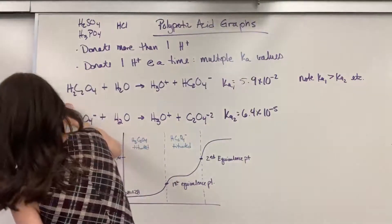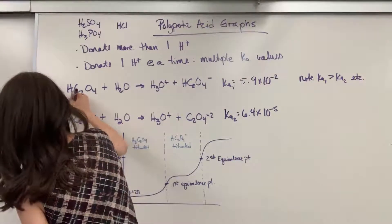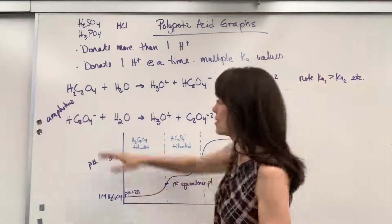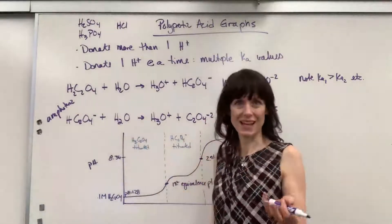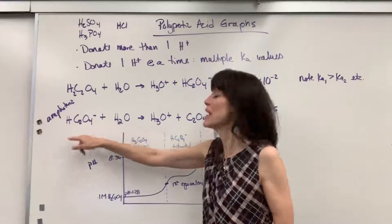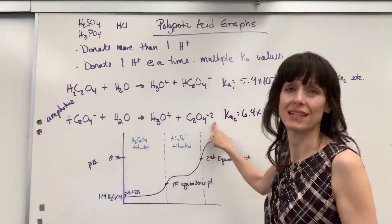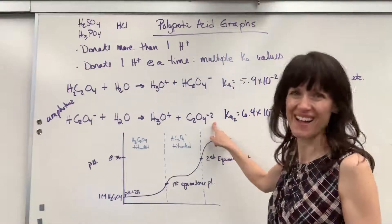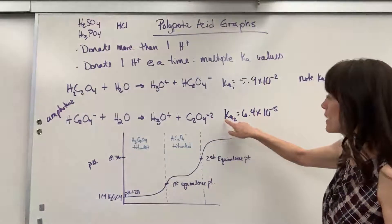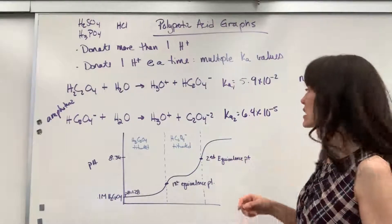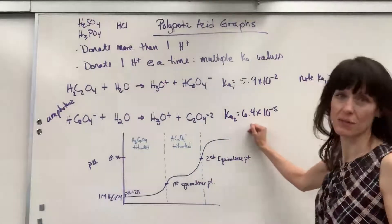So now it's going to react with water as the acid and donate that second hydrogen. So it reacts, produces hydronium, and the final product is an oxalate ion. Notice the Ka. We write it Ka2 because it's the second deprotonation. The second hydrogen that's lost is 6.4 times 10 to the minus 5.